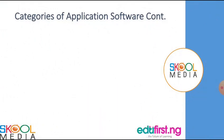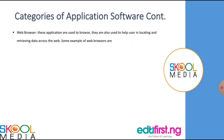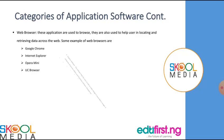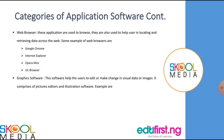Web browser is one of the categories of application software. These applications are used to browse; they are also used to help users in locating and retrieving data across the web. Some examples are Google Chrome, Internet Explorer, Opera Mini, and UC Browser.